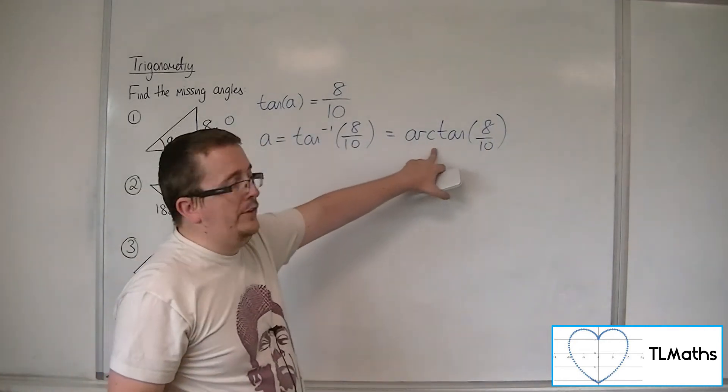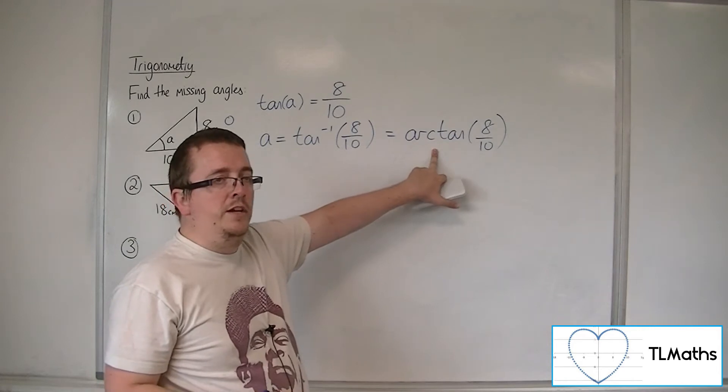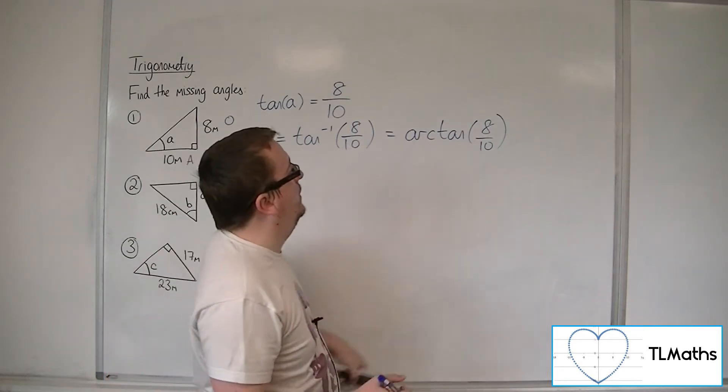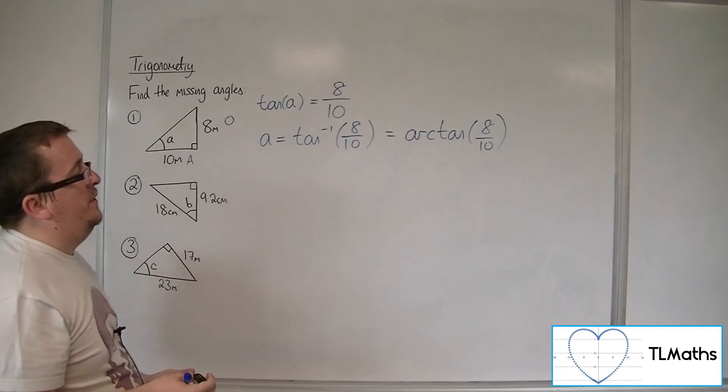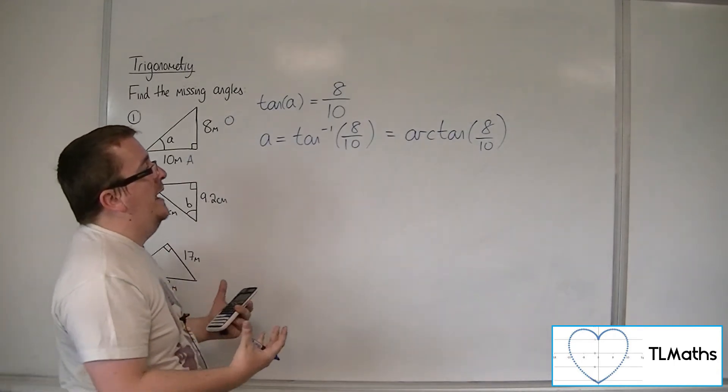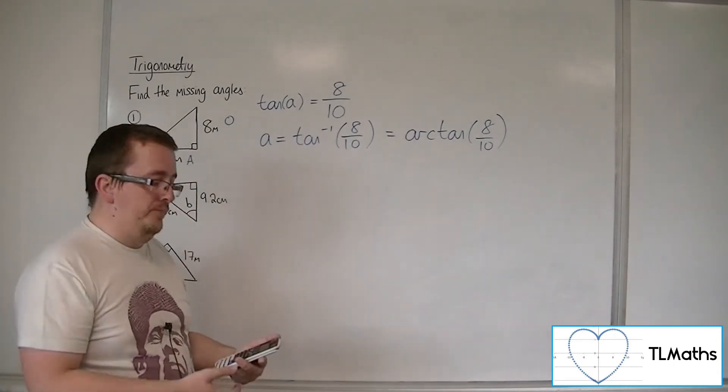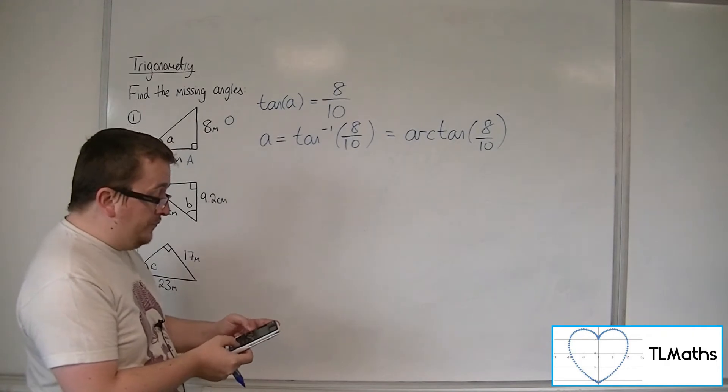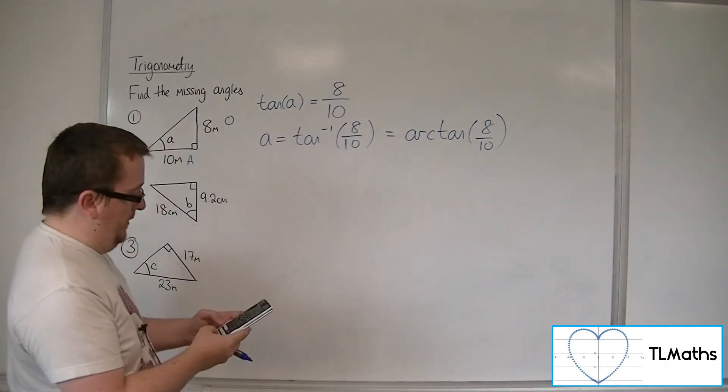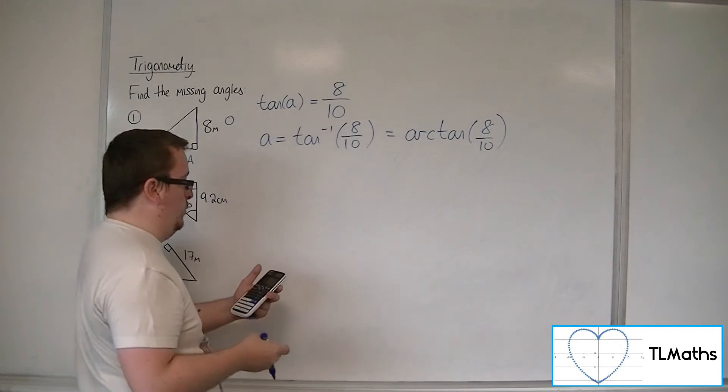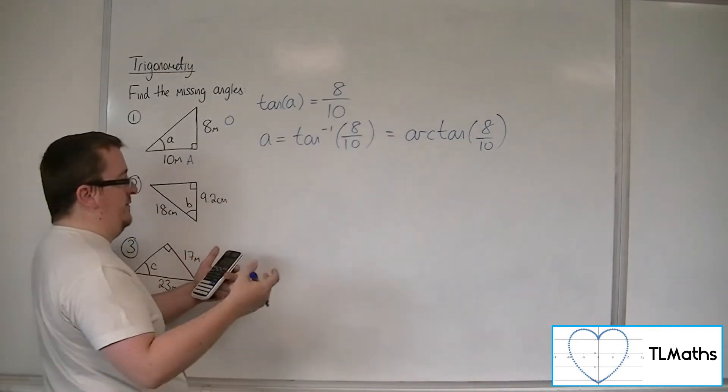So arc tan of 8 over 10 is exactly the same thing as the inverse tan. So inverse tan of 8 over 10 is equal to 38.6598, etc.